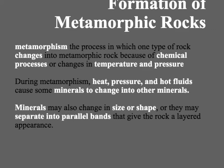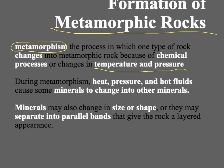We have already covered igneous rocks and sedimentary rocks in the rock cycle. Now for the last type: metamorphic rock. Metamorphic rocks are produced by a process called metamorphism, which is changing one type of rock because of heat and pressure. They can also be changed by chemical changes, but for the most part, we're going to be looking at heat and pressure.